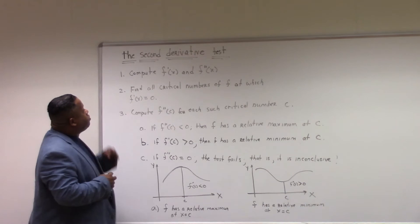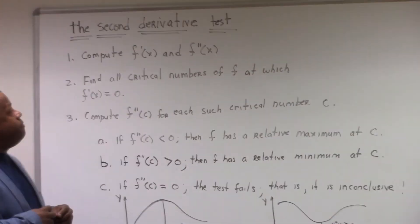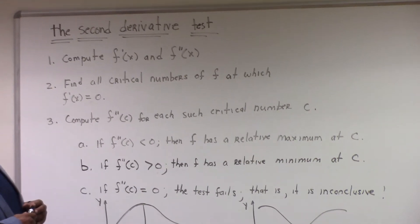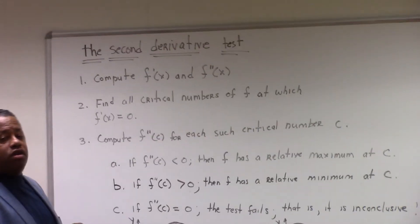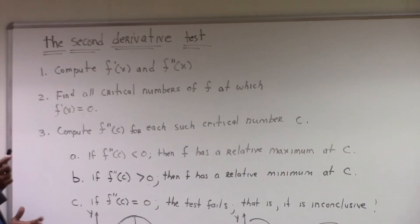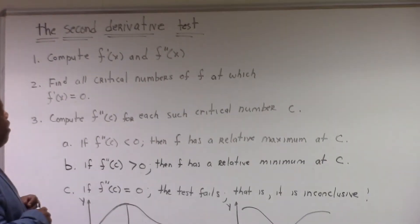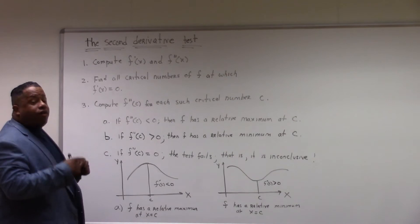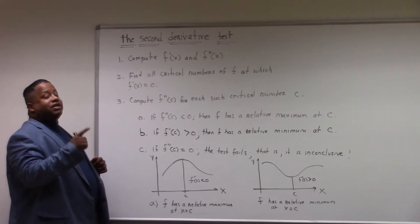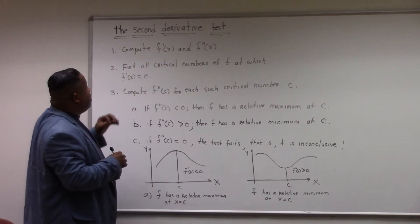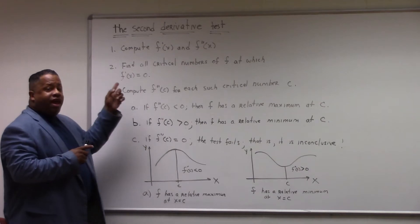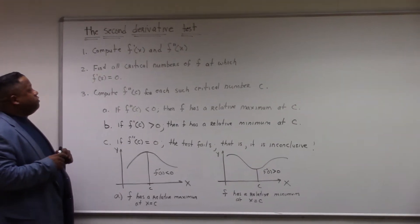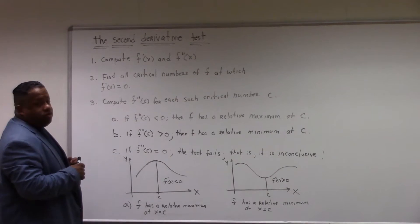First, we're going to compute f prime of x and then f double prime of x, which is the first derivative and the second derivative with respect to x. Find all critical numbers of f at which f prime of x is equal to zero, so you're going to find critical numbers at the first derivative. When you find the first derivative, you solve for x and find those numbers.